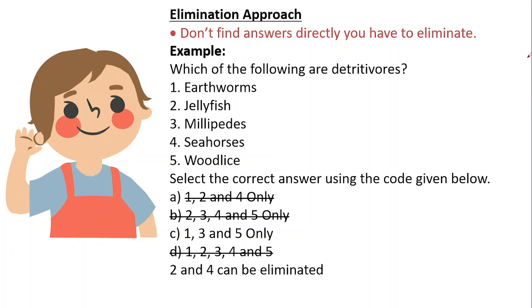Now we'll show you the elimination approach, because this has become the most important approach in recent times. Without this, it is very difficult to qualify this exam. See this question: which of the following are detrivores? Detrivores are the elements which feed on the dead. You know that jellyfish is a fish and they live in the ocean and they do not feed on the dead, so eliminate this. And seahorses also like that. So two and four are eliminated. Now wherever two or four are there, cut that option. In most cases you will find one answer. In this case, C is your answer. Or at times you might be able to eliminate only two options and you are left with two options, then use your probability approach.